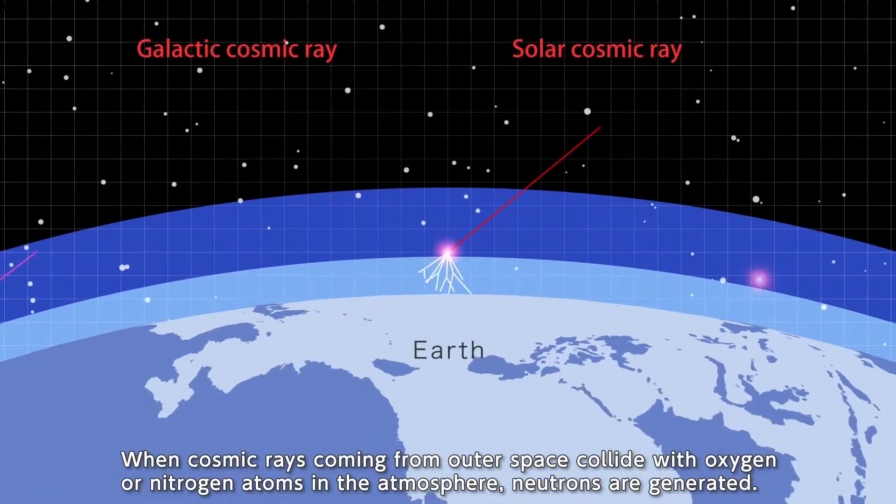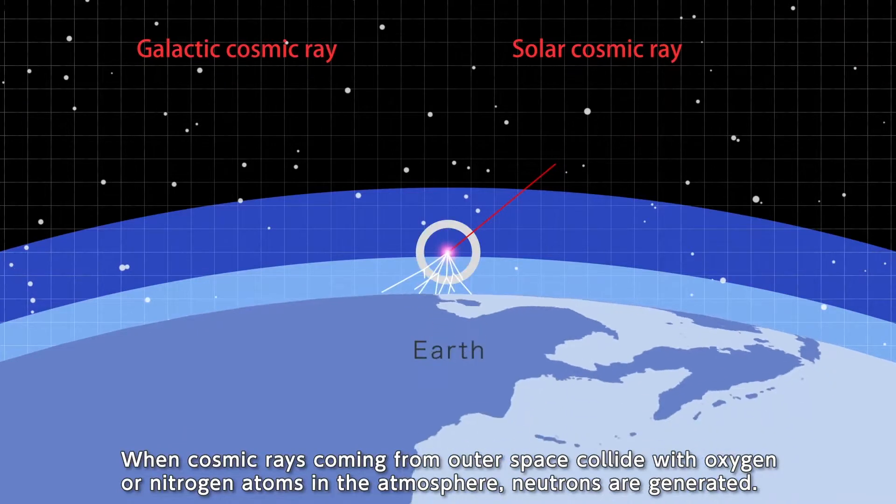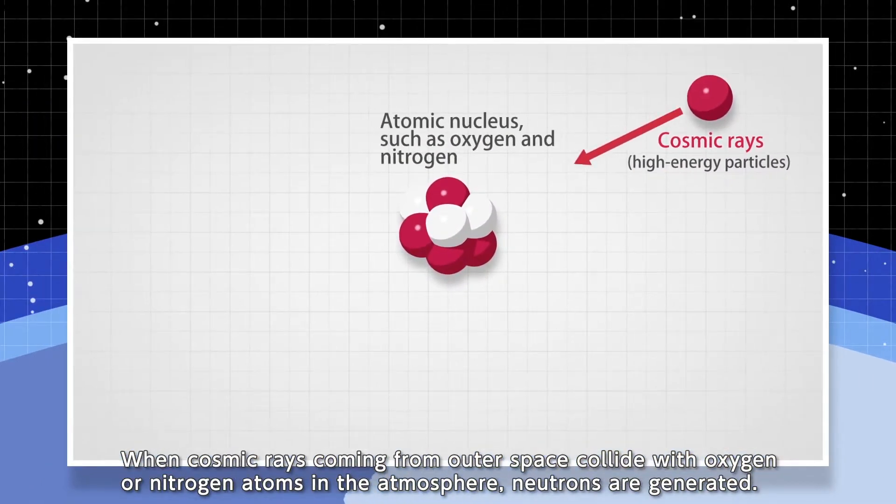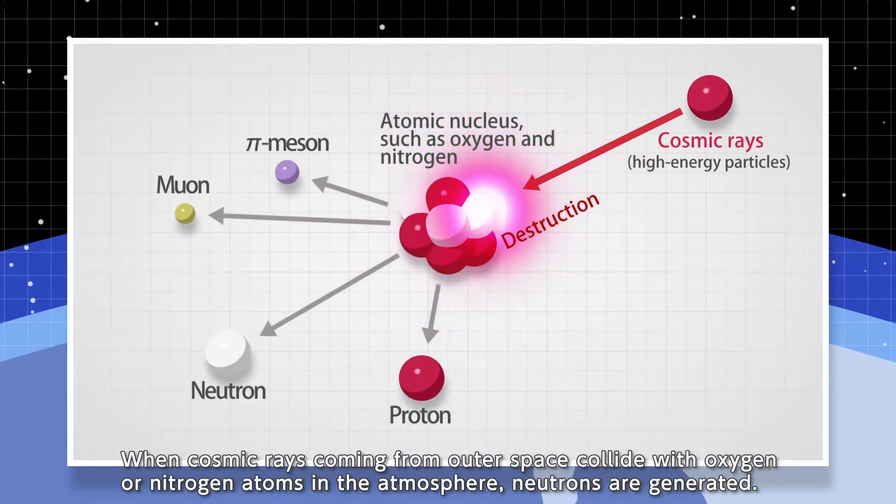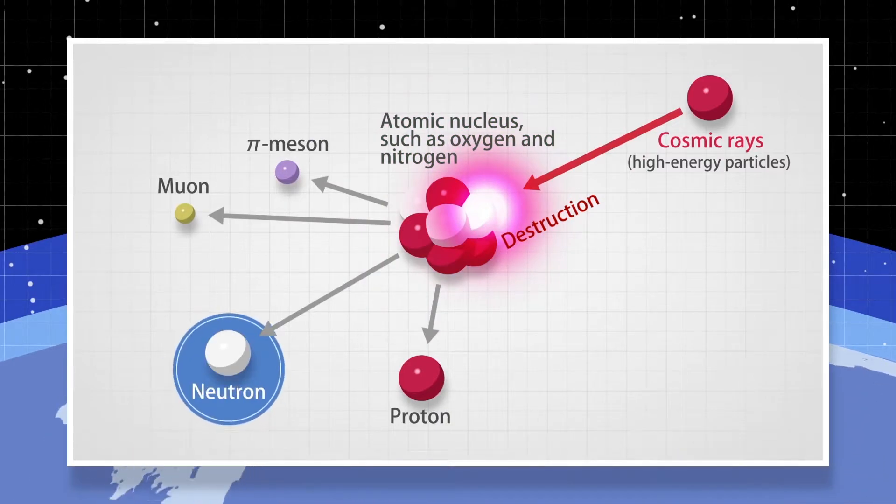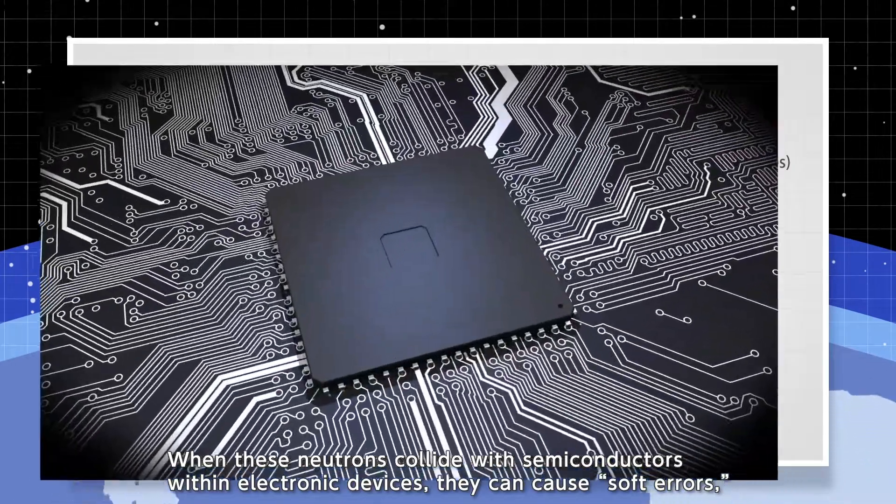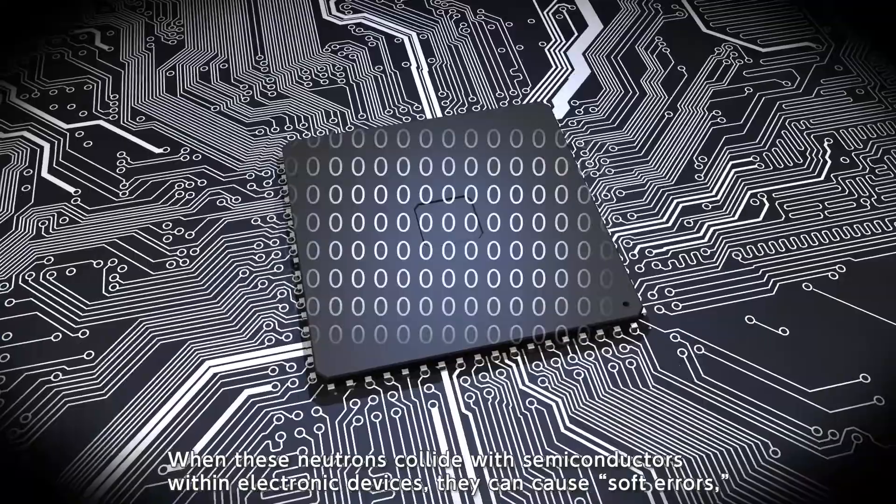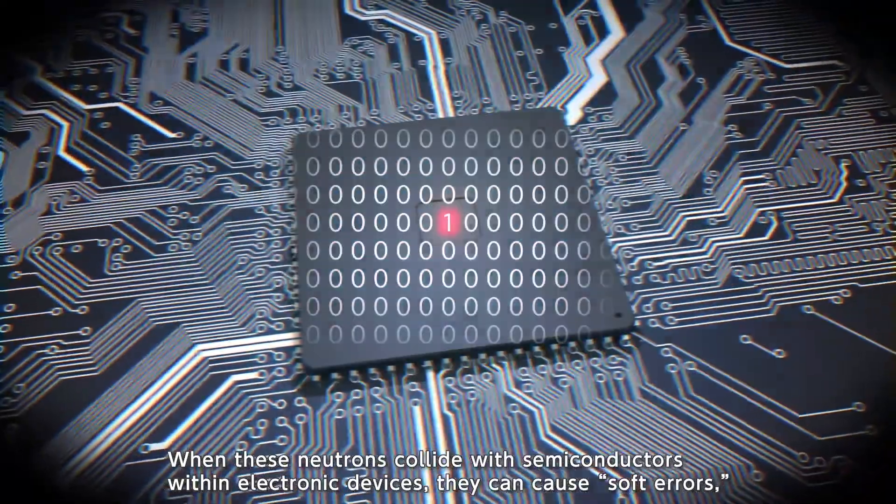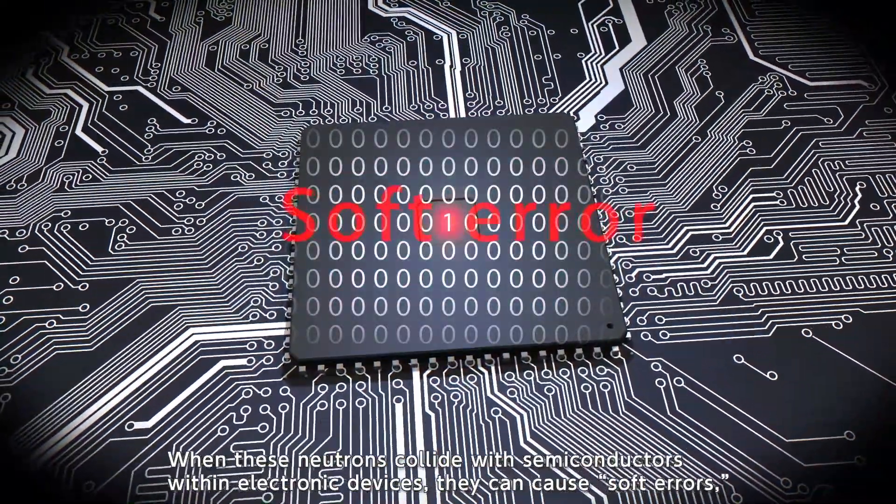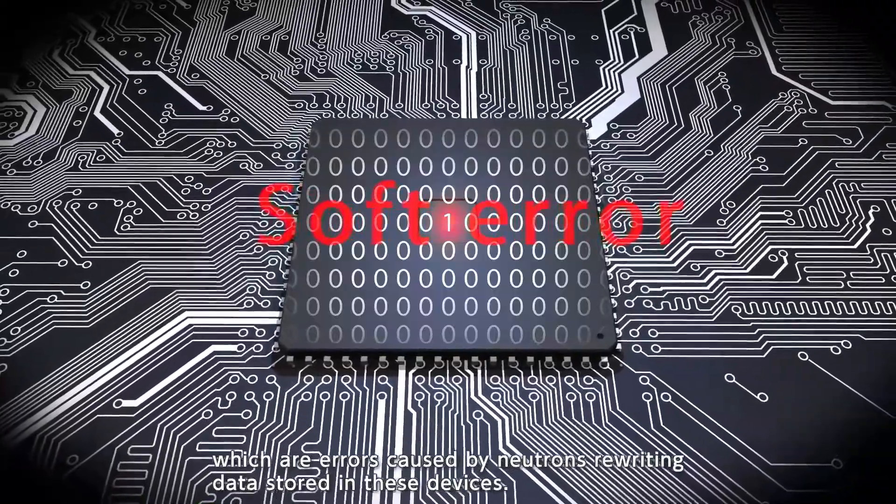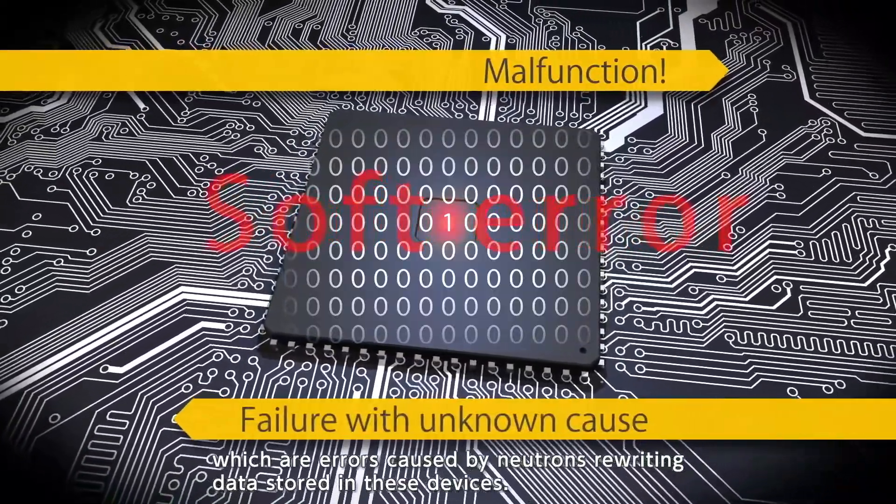When cosmic rays coming from outer space collide with oxygen or nitrogen atoms in the atmosphere, neutrons are generated. When these neutrons collide with semiconductors within electronic devices, they can cause soft errors, which are errors caused by neutrons rewriting data stored in these devices.